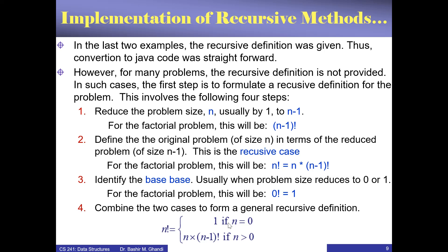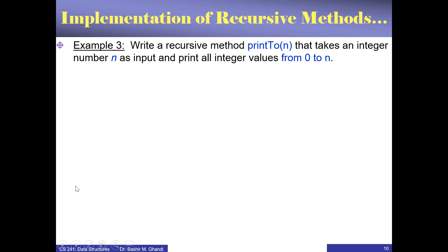Example one: write a recursive method printToN that takes an integer n and prints all integers from 0 until n. If given 5, print 0, 1, 2, 3, 4, 5. Iteratively, this is a simple loop from 0 to n printing i. But we need a recursive definition. We are not given it — we have to come up with it ourselves. Following the four steps, step one: reduce the problem — instead of printToN, consider printTo(n-1).